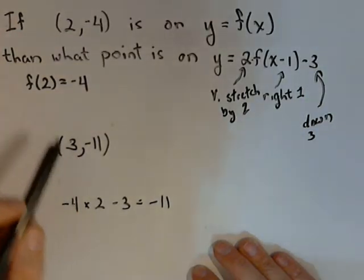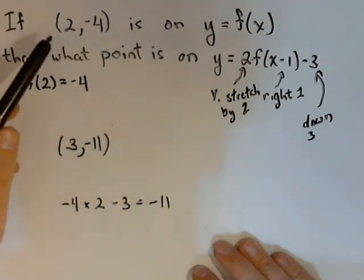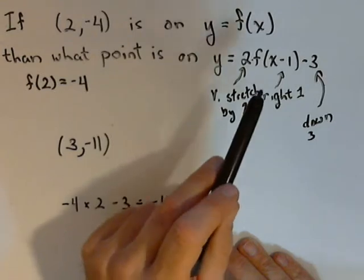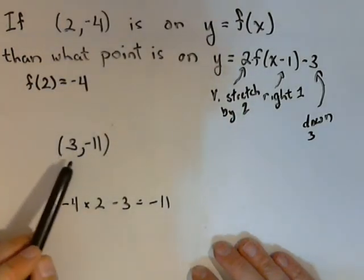So this is the corresponding point to this point on our transformed graph. So the point 2, negative 4, when we do these transformations to our function, whatever our function is, the new point would be moved to 3, negative 11.